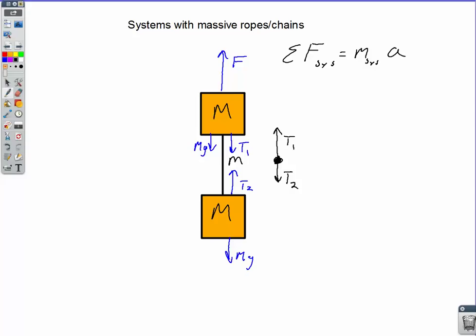T1 would be the tension in the rope at the contact point between the upper block and the rope. And then T2 would be the tension at the contact point between the lower block and the rope. So this is why it's not same rope, same tension anymore.